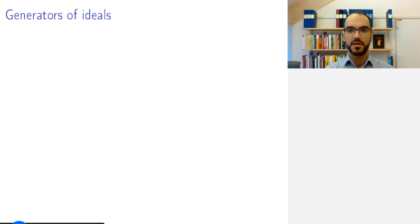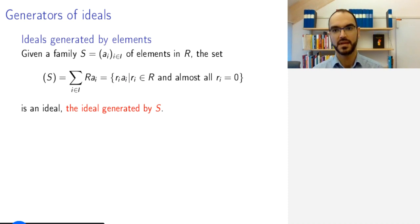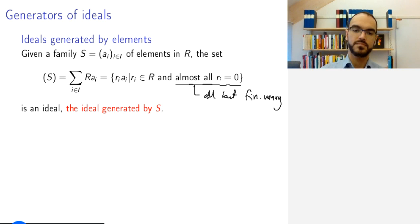Now ideals will often be given as generated by some sets. It's the same idea of generators in any branch of mathematics. Given a family, finite or infinite, of elements in your ring R, we denote by parentheses around this family the ideal generated by S. This is the set of all sums of all products of elements from this family with elements in the ring. But as usual when we deal with potentially infinite things, since we do not have a notion of convergence, we have to require that almost all ri are equal to zero—this means all but finitely many, so that we can sum.